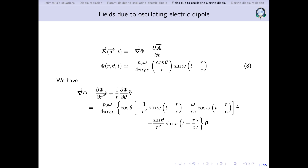Differentiating φ with respect to r, we take p₀ω / (4πε₀c) outside, multiplied by cos θ. Using the product rule on (1/r)·sin(ωt − r/c): differentiating 1/r gives −1/r²·sin(ωt − r/c), and differentiating sin(ωt − r/c) with respect to r gives −ω/(rc)·cos(ωt − r/c). This gives the r-cap term.